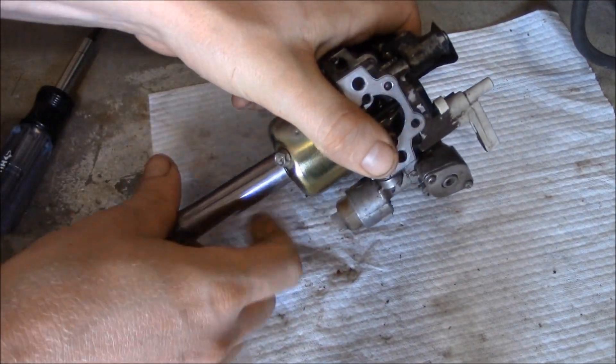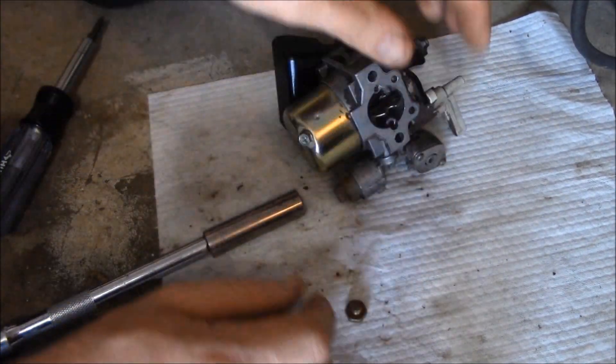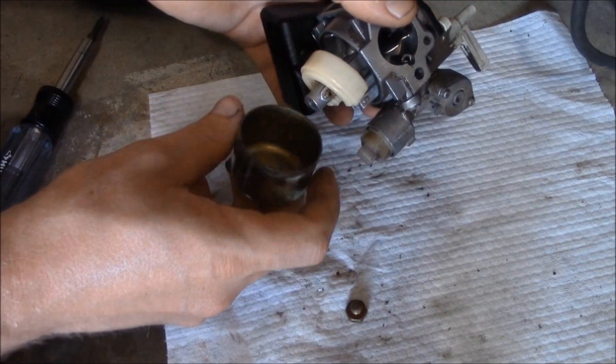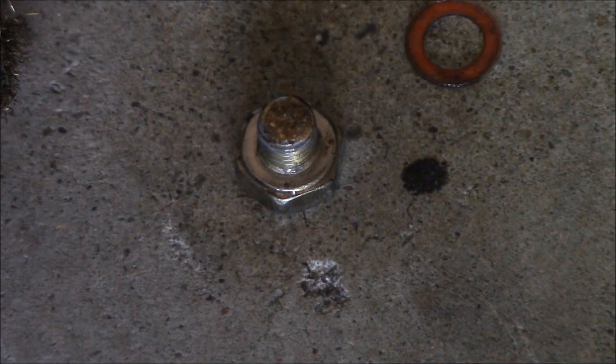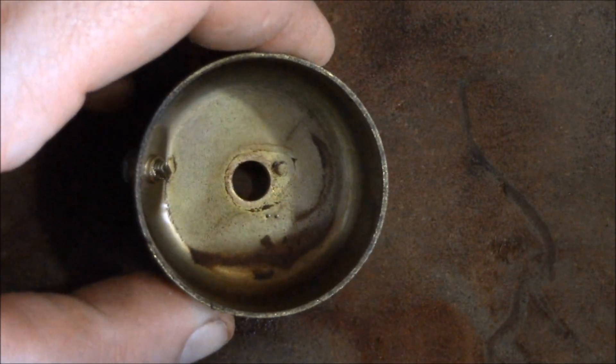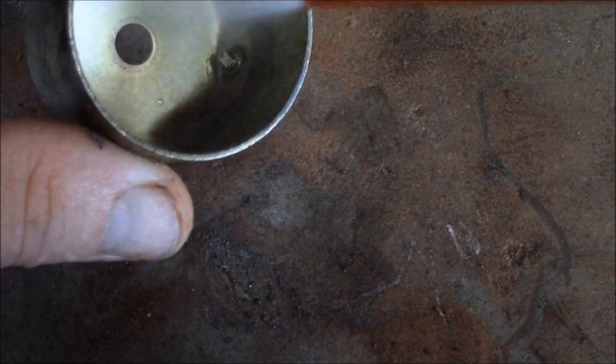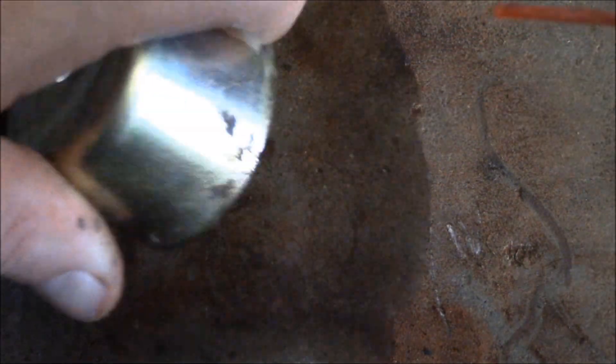So now to the carb cleaning time. This is the bowl and the nut that holds on the bowl. The bowl holds fuel in it, and that's usually where you have varnish build up. I'm using a brass brush to clean off the gunk on metal parts and nylon for any plastic parts. So that's the bowl, just spray it out. You might have to use your brass brush a little bit, but you want to make sure it's super clean.